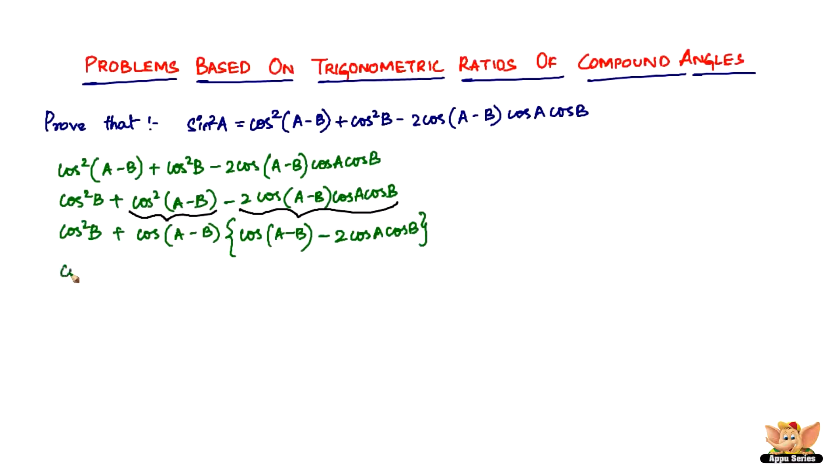The next step is going to be a little bit of expansion. Now using the formula cos(A-B). In the bracket, let's use the formula for cos(A-B), which is cosAcosB plus sinAsinB minus 2cosAcosB.